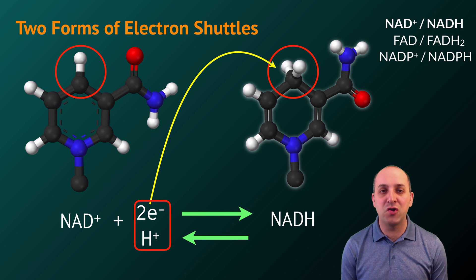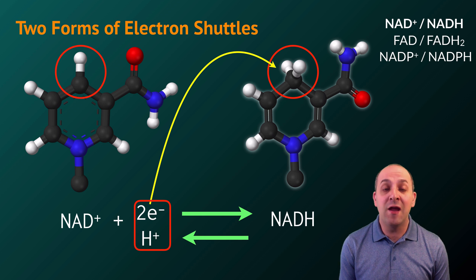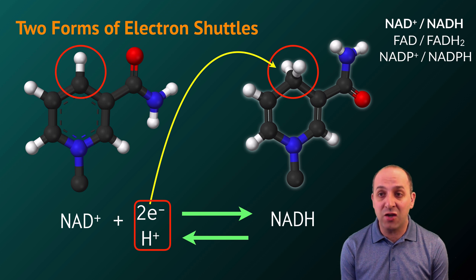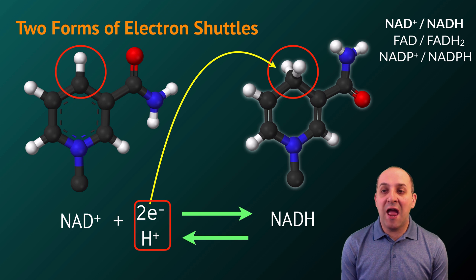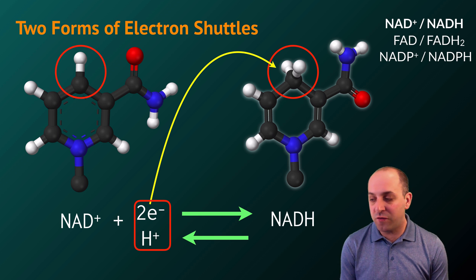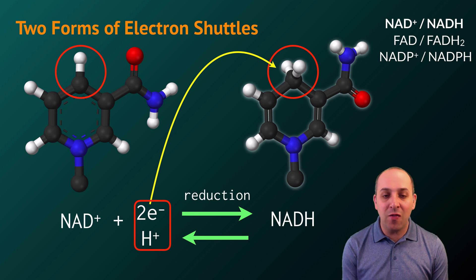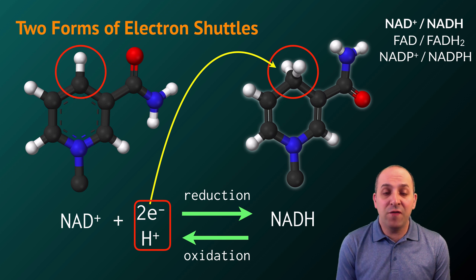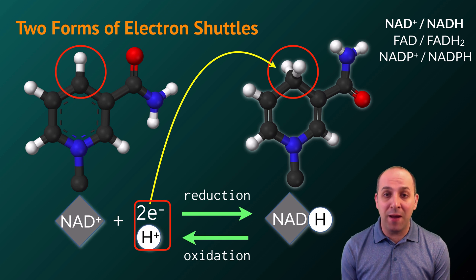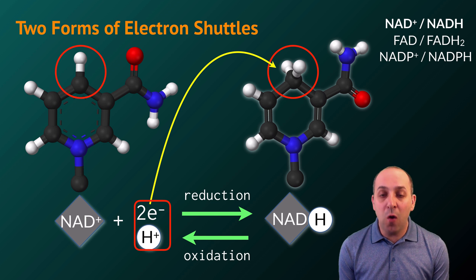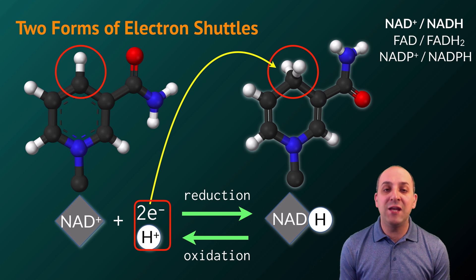Cycling of the oxidized and reduced versions of electron shuttles is crucially important in energetic metabolism. There are three different electron shuttles you'll see during our discussions: NAD+/NADH, FAD/FADH2, and NADP+/NADPH. Each serves as an electron shuttle in different reactions, gaining electrons to be reduced and then giving them up to be oxidized back to the starting form. For the rest of this unit, I'll represent these molecules graphically rather than focusing on their specific chemistry.